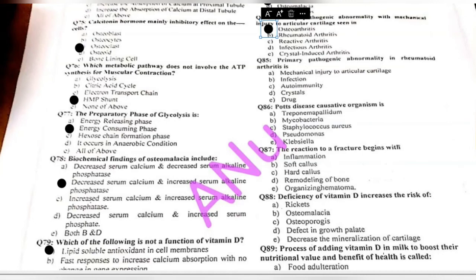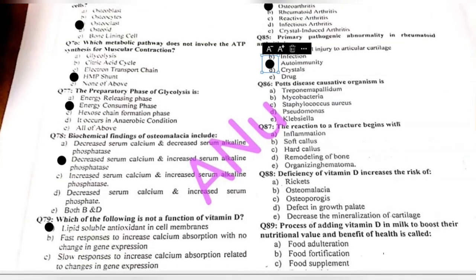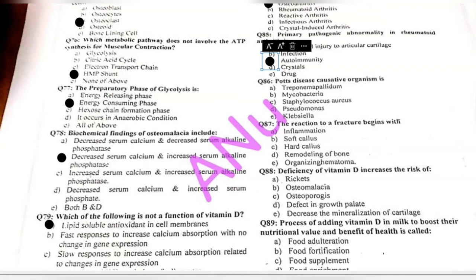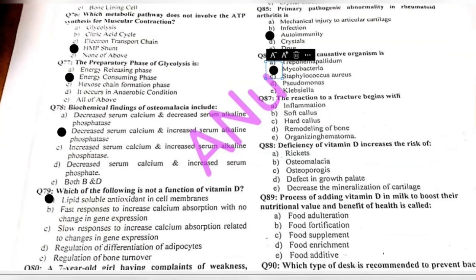Questions 85-86: the primary pathogenic abnormality in rheumatoid arthritis is — mechanical injury to articular cartilage, infection, autoimmunity, crystals, or drugs? Rheumatoid arthritis is autoimmune in origin. Pott's disease is caused by Mycobacterium tuberculosis and is a type of osteomyelitis.